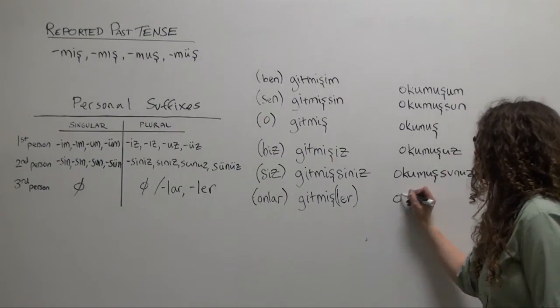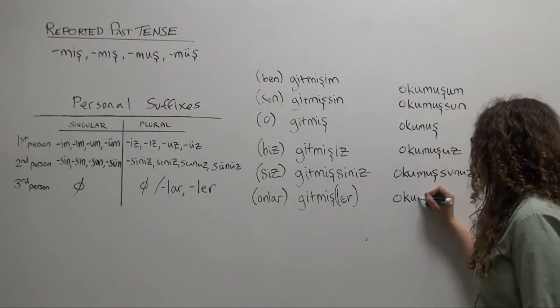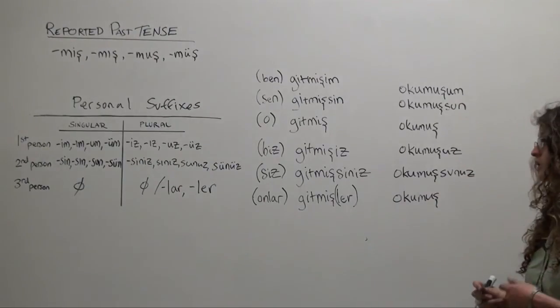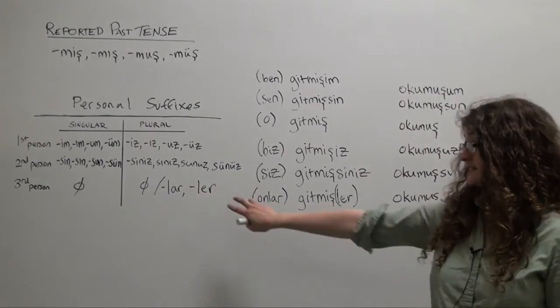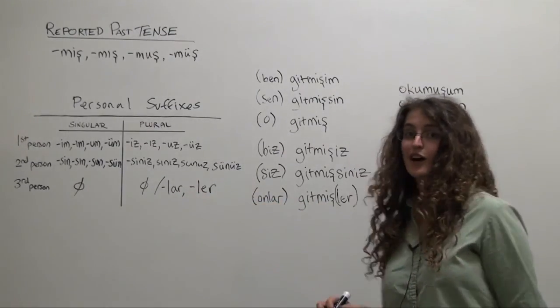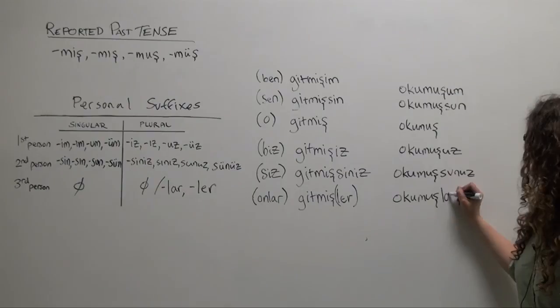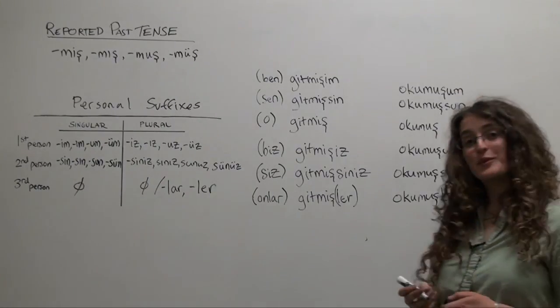And onlar okumuş or okumuşlar, following the rules in this case with the plural suffix of two-way vowel harmony. And that's the reported past tense.